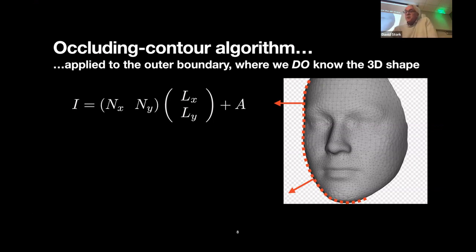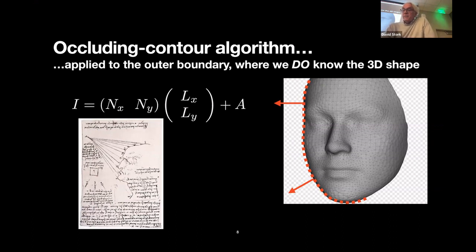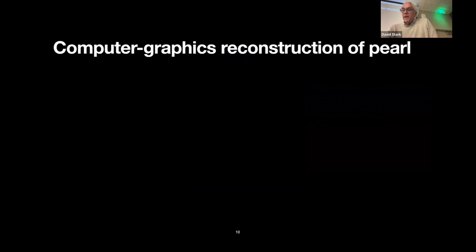Any normal at the occluding contour must be perpendicular to the contour itself and in the plane of the painting, pointing neither towards us nor away — it's sort of like a flagpole on the horizon. This makes the mathematics much simpler and allows us to estimate the direction to the illumination. As far as I can tell, the first person to understand this principle was Leonardo, who illustrated it in his Codex Urbanus. The result is a direction of 140 plus or minus four degrees.